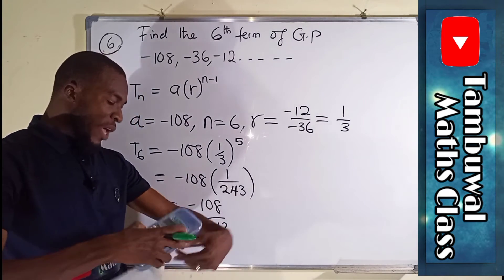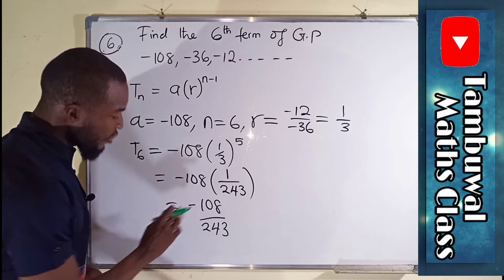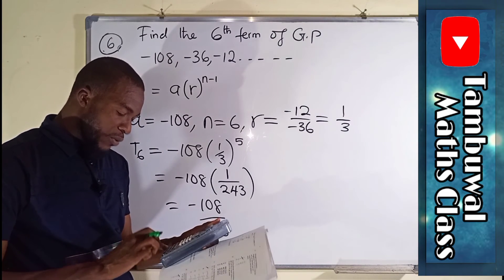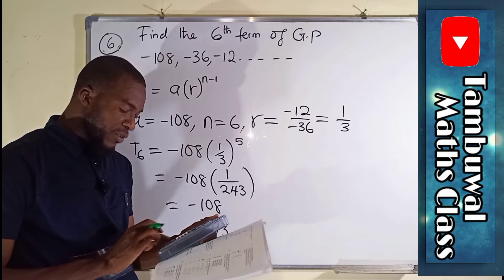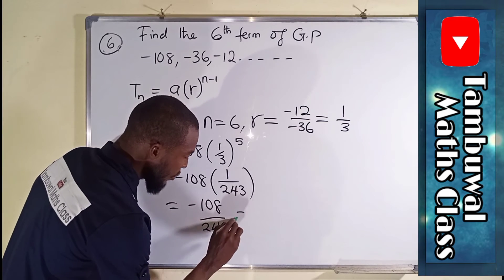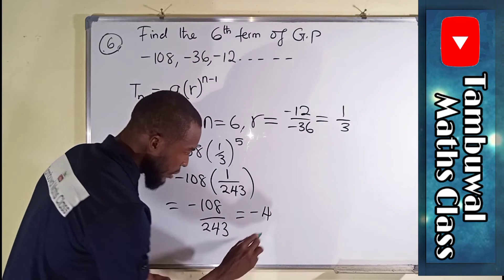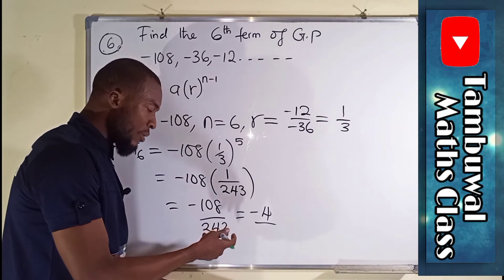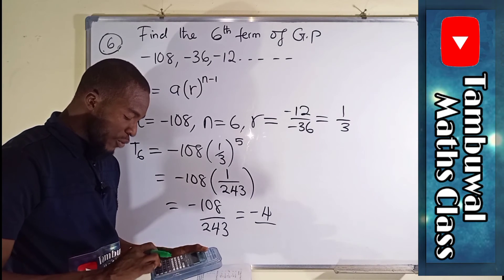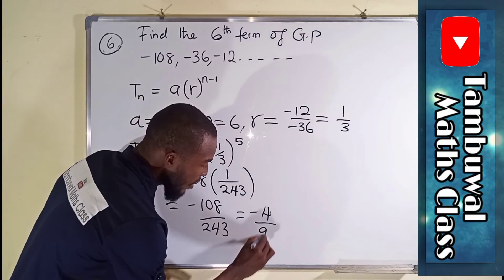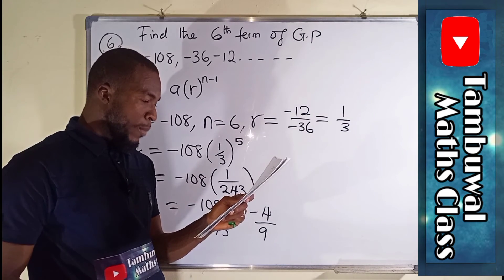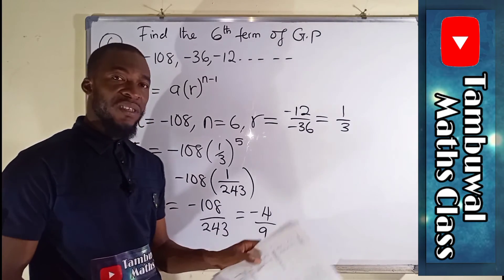So this is our answer, but what we have here is to the lowest term. So we can reduce this to the lowest term. I believe, let us use our calculator to find out. 108 divided by 27 is equal to 4. But this is negative. If you divide this by 27, you're going to obtain negative 4. Since this is equivalent fraction, we divide this by 27. We have to divide this by 27. 243 divided by 27 is 9. So our final answer is negative 4 over 9, which is option C here.